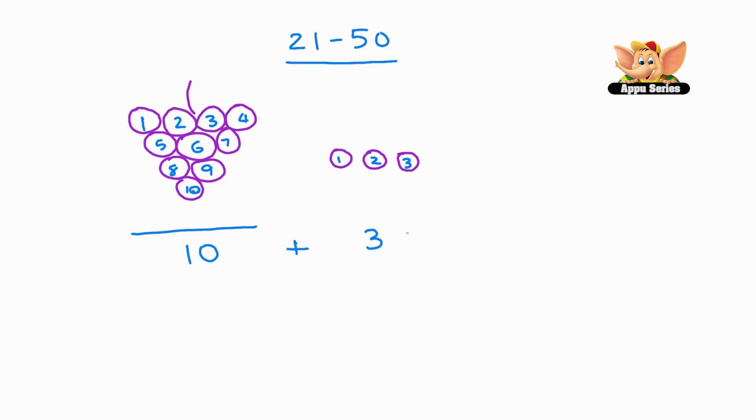Now, how many do we have? It can be written as tens and ones. So, under tens, we have 1. Under ones here, we have 3. So, we have, in total, 13 grapes here.